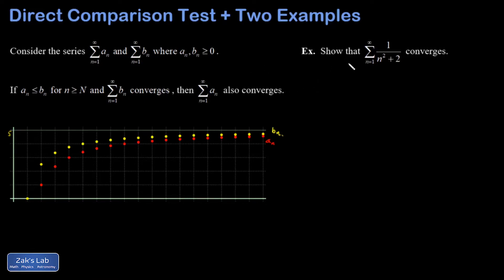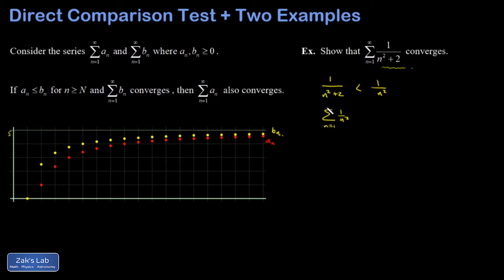Let's apply that to a first example — these get trickier in the future, but I'm keeping it basic right now. Look at the terms in this series. That looks a lot like 1 over N squared, which I know is a convergent P-series because the exponent is bigger than 1. By adding a 2 in the denominator, each of those terms is actually less than each term in 1 over N squared. So: 1 over (N squared plus 2) is less than 1 over N squared, and the sum of 1 over N squared converges. Therefore, our series also converges.